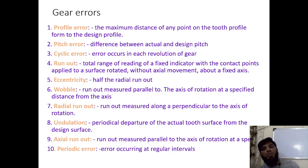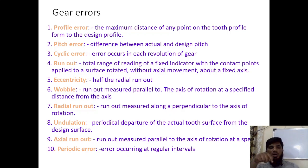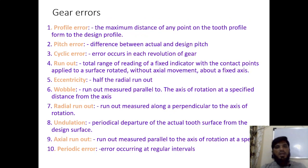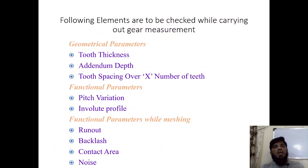Wobble is the runout measured parallel to the axis of rotation at a specified distance from the axis. Radial runout is the movement perpendicularly away from the axis. Axial runout is the runout measured parallel to the axis of rotation. These error types — cyclic, runout, eccentric, wobble, radial runout, and axial runout — are defined here for reference.